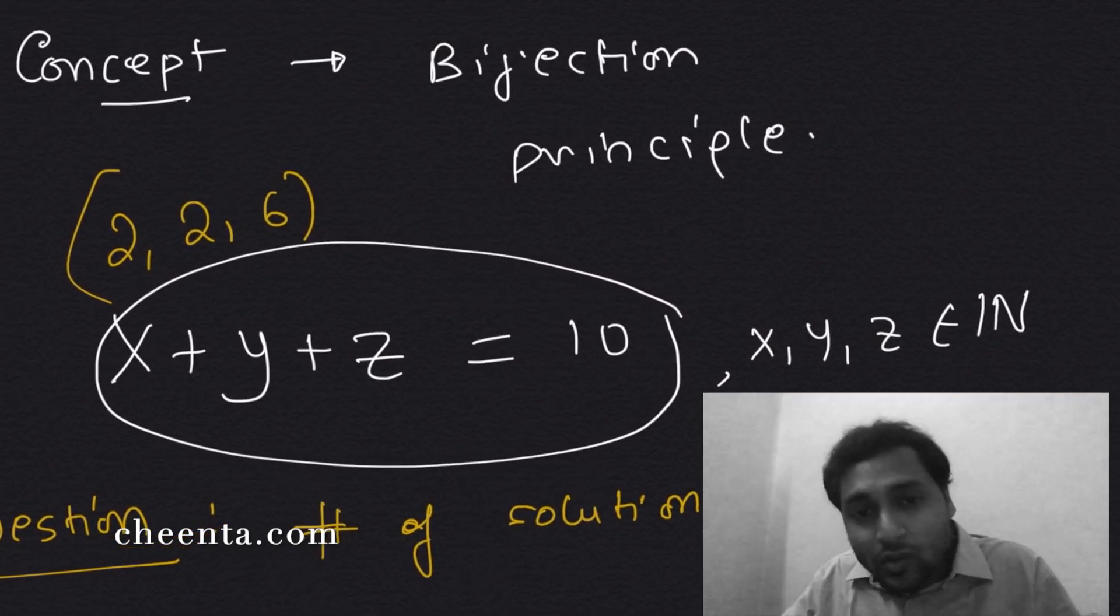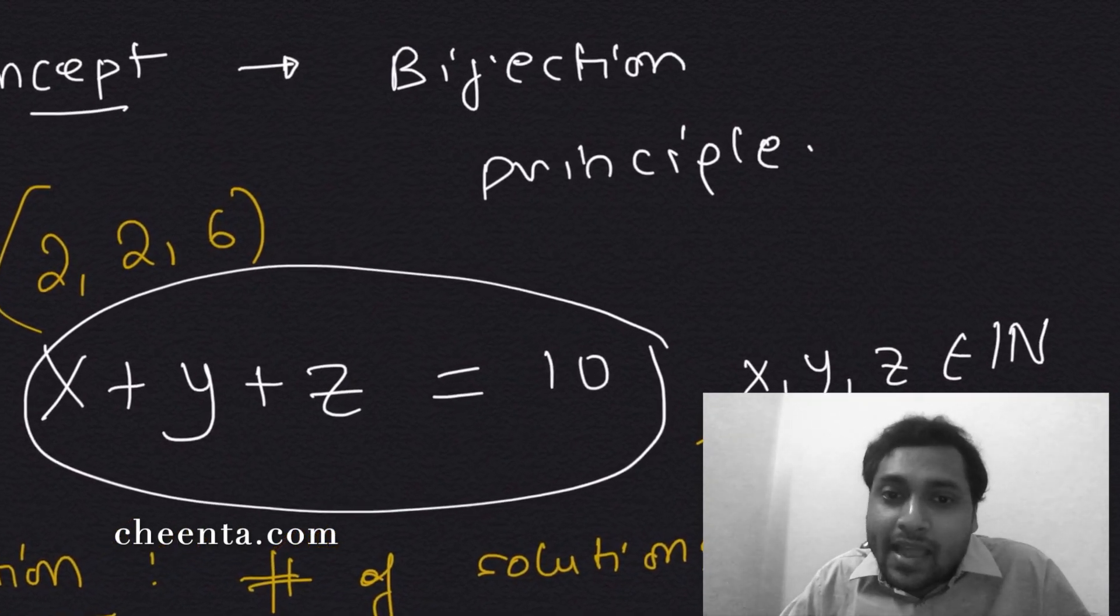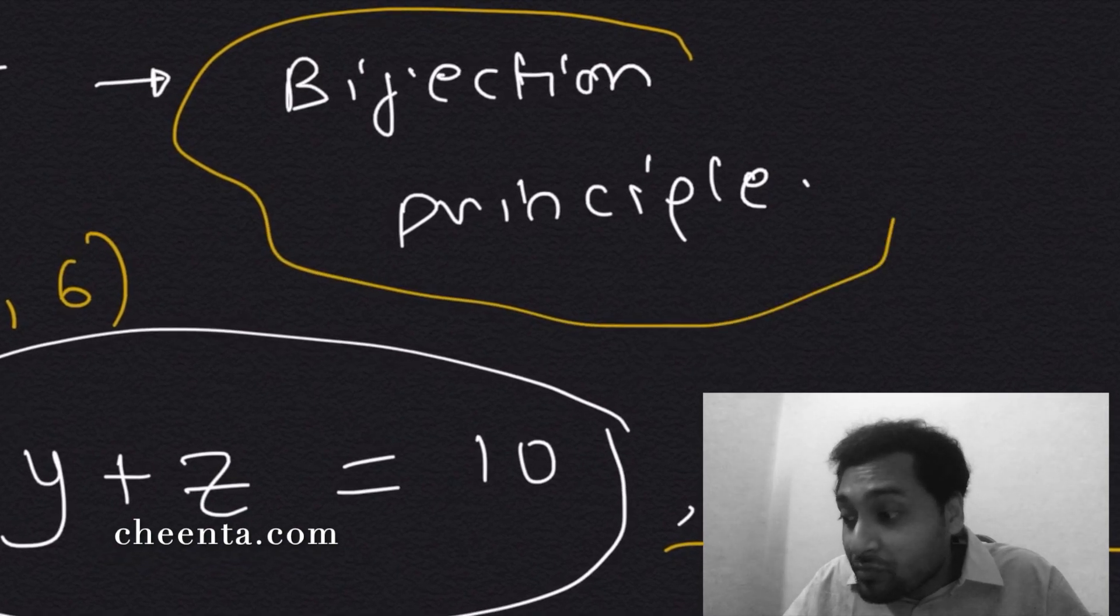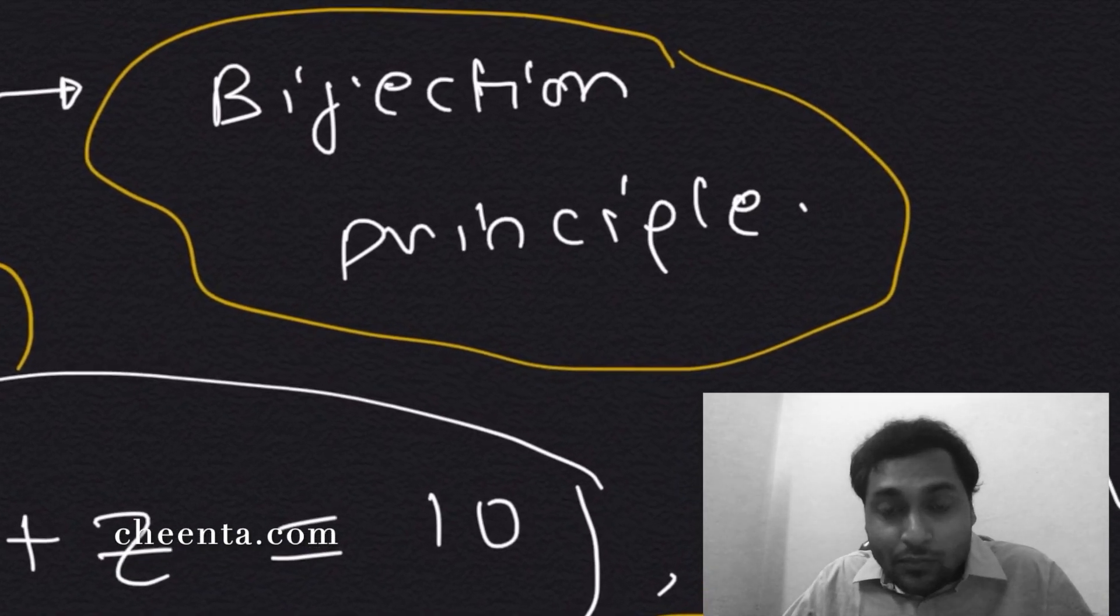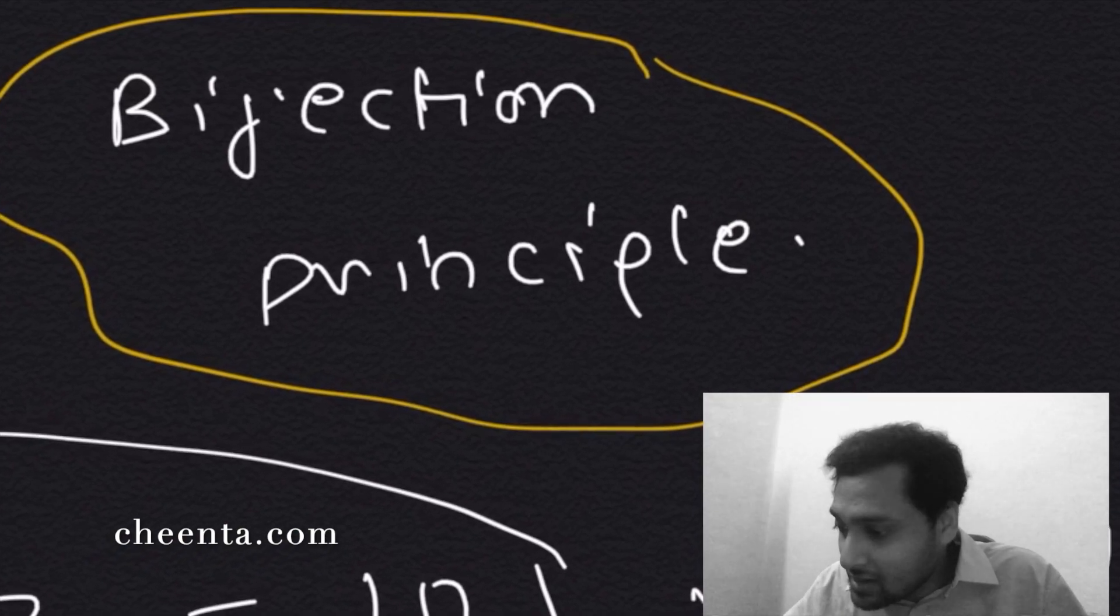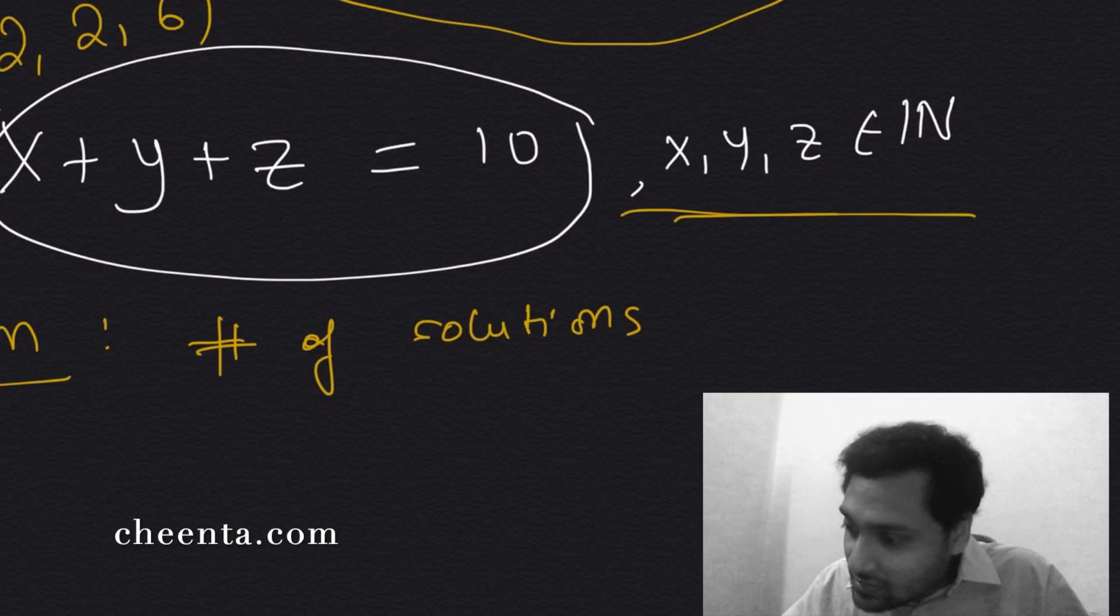How many such solutions are possible? That is the question, and we will use this problem to understand the notion of bijection principle, which is used in other problems in combinatorics as well. So how do we do that? Well, here is the strategy.